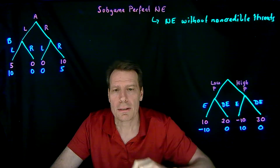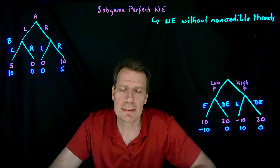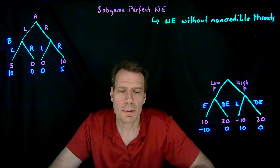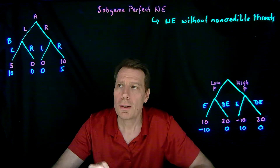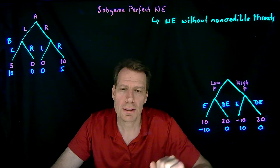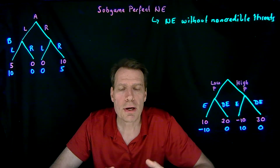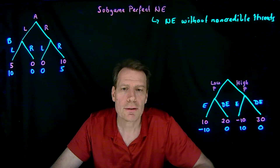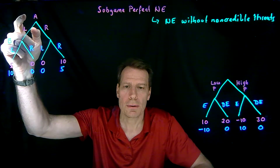It turns out that solving for the subgame perfect Nash equilibria is easier than solving for all the Nash equilibria in the sequential move game. When we solved for all the Nash equilibria, we took the game tree, turned it into a matrix, worked with the matrix, and then related our results back to the game tree. For subgame perfect Nash equilibria, we can simply work with the game tree. All we have to do is start at the bottom of the tree and solve it on the way up.